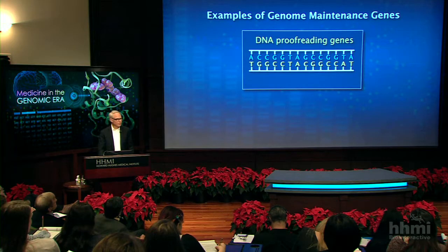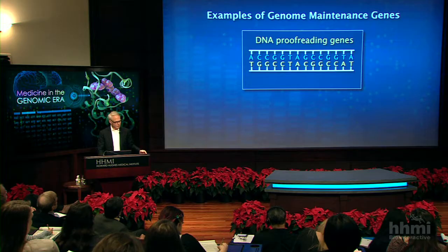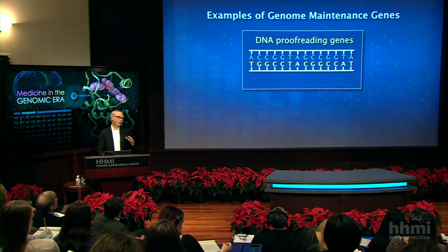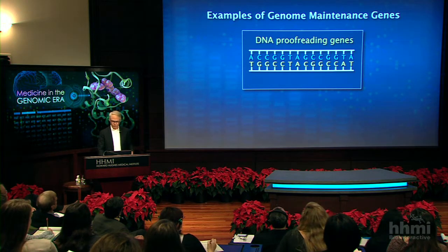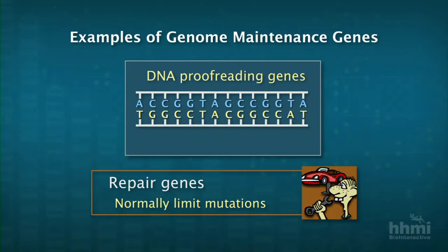Imagine what would happen if you had a mutation in the proofreading enzyme itself. Suddenly, you would accumulate mutations at an extremely rapid rate, and that's exactly what happens in patients with 1,000 or more mutations per tumor. The types of tumors that have that problem include a form of colon cancer — not all colon cancers, but that's where this was first discovered. So repair genes are important in limiting mutations, and loss-of-function recessive mutations in those repair genes leads to this phenotype.